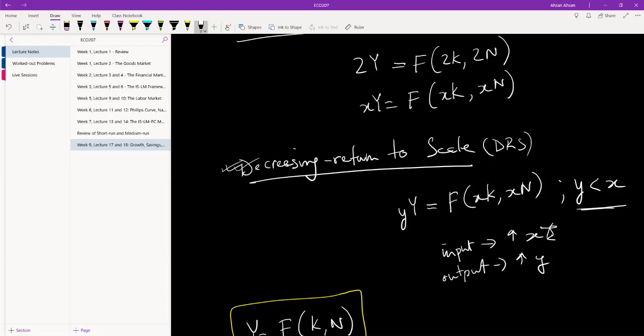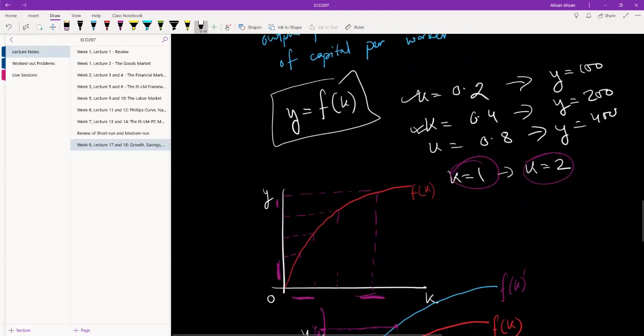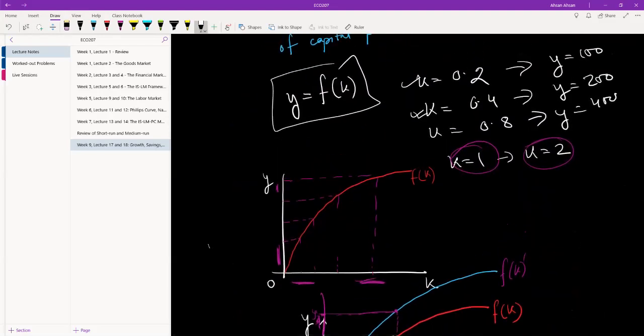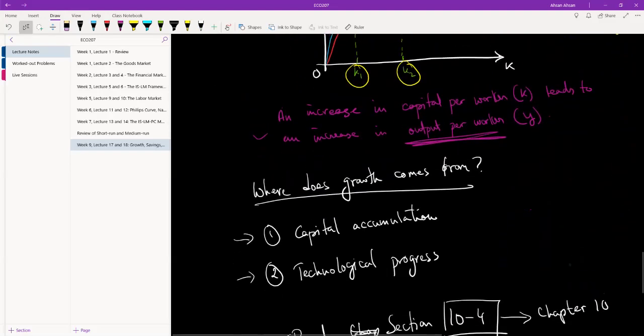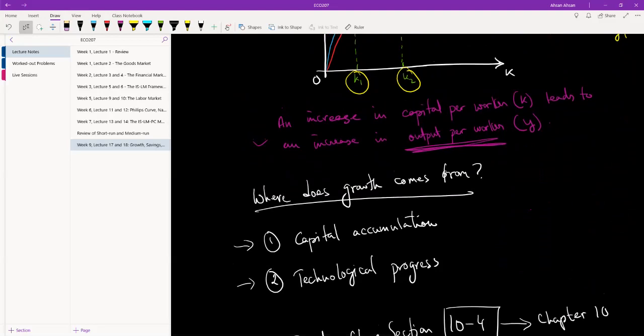Second thing we've done, having done that, we've established that decreasing returns to scale is a realistic scenario. And once we've decided that, decreasing returns to scale is the way to go, we've been able to draw a diagram, a capital output diagram. That's the third thing we've done. And once we've been able to draw the diagram, the final thing, the fourth thing we've done, is talked about the sources of growth.